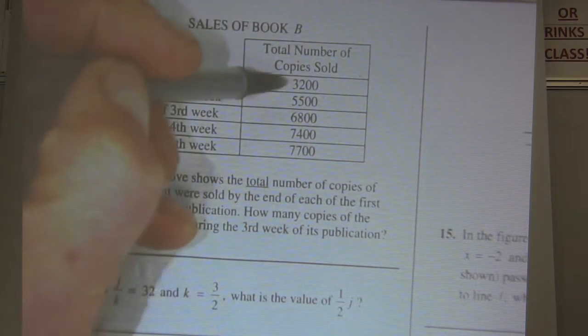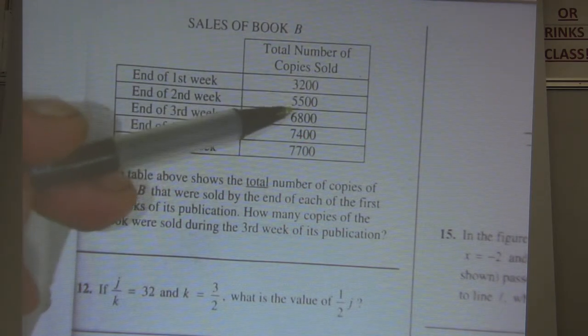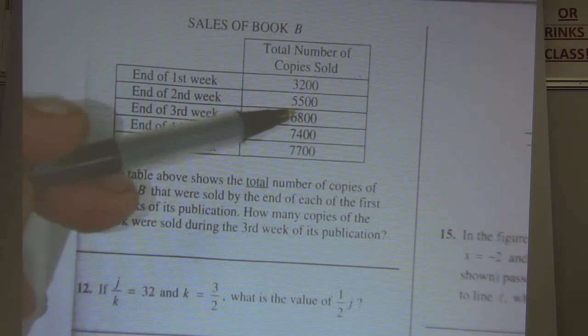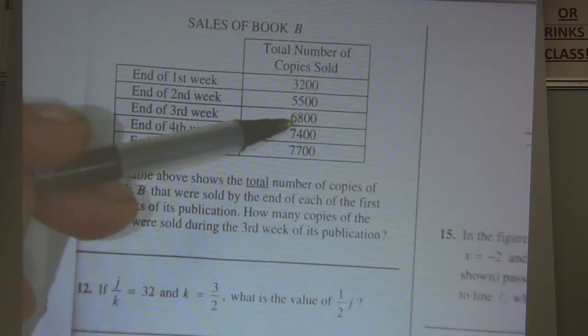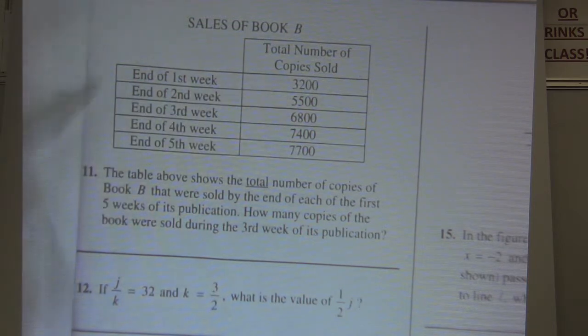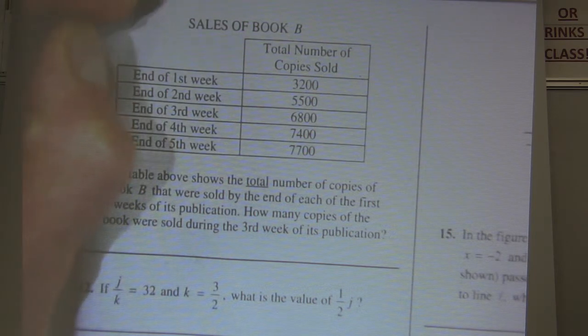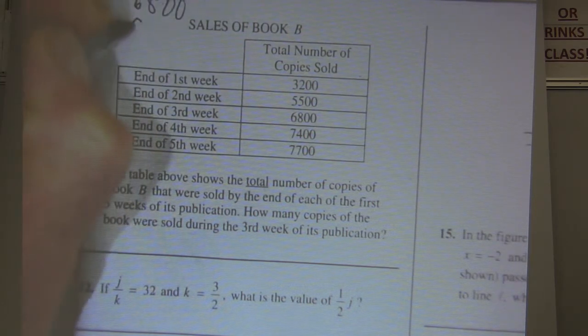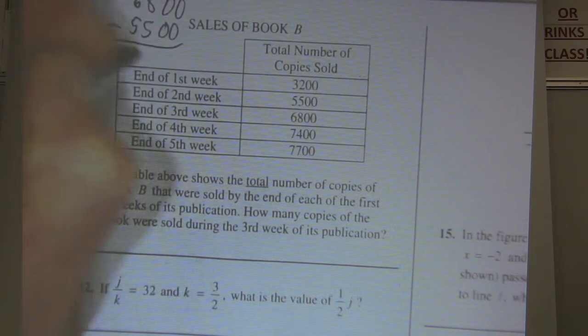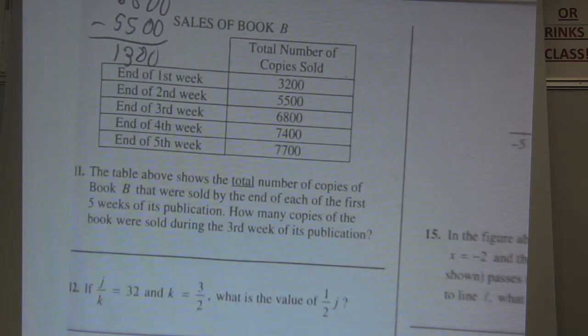So, after the first week, they sold 3,200. After the third week, they sold 6,800. So, it's just a subtraction one. 6,800 minus 5,500. I'll write that up here. 6,800 minus 5,500. Sorry about my messy writing. And you get 1,300. That's the answer, 1,300.